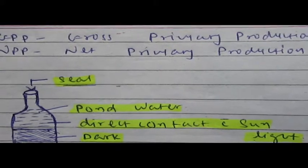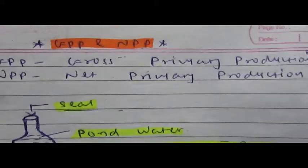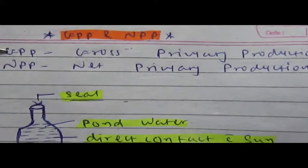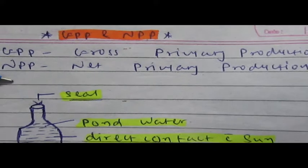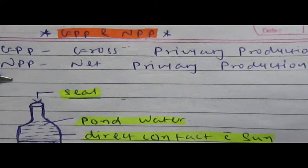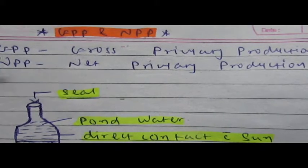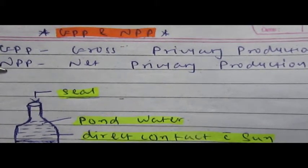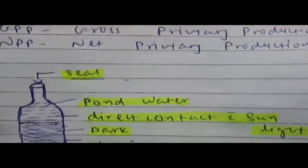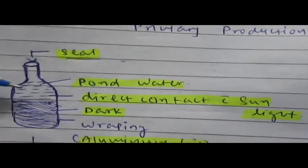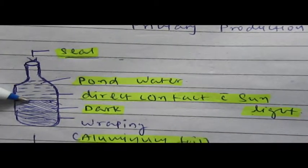Hello friends, today we will give you a very quick understanding about gross primary production and net primary production in aquatic ecosystems, and the measurement of these two terms. In this measurement, a number of bottles — a series of bottles — are taken.